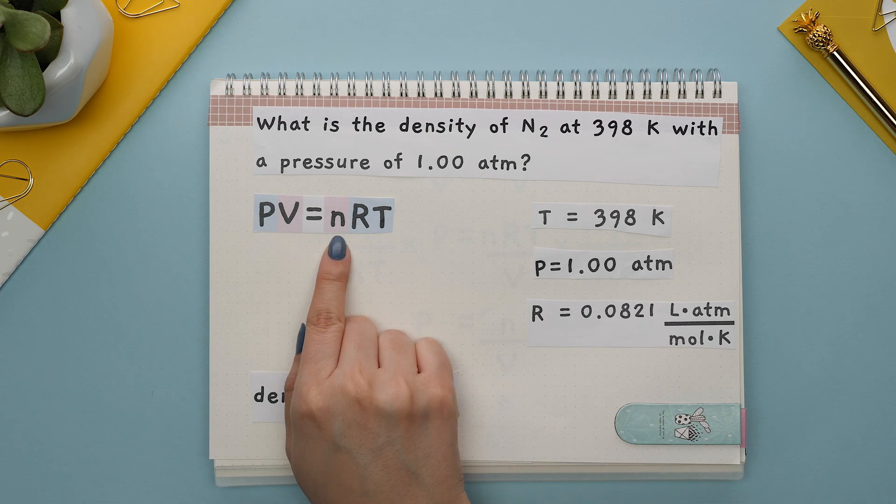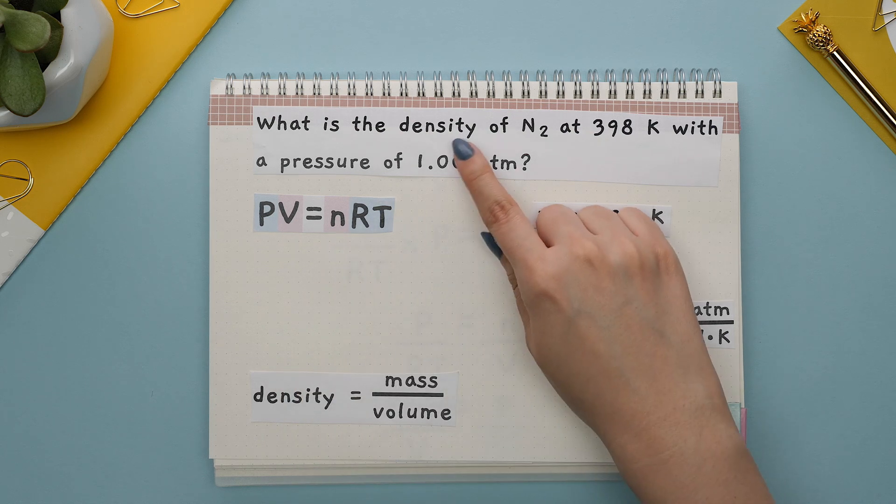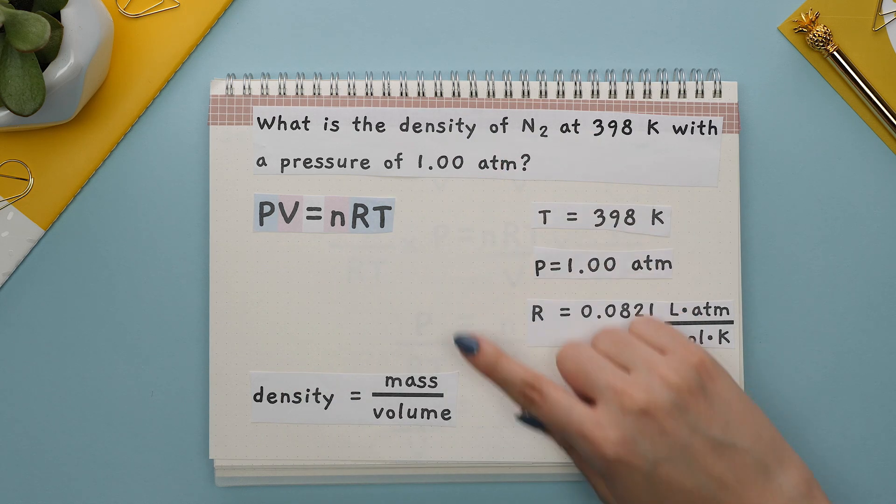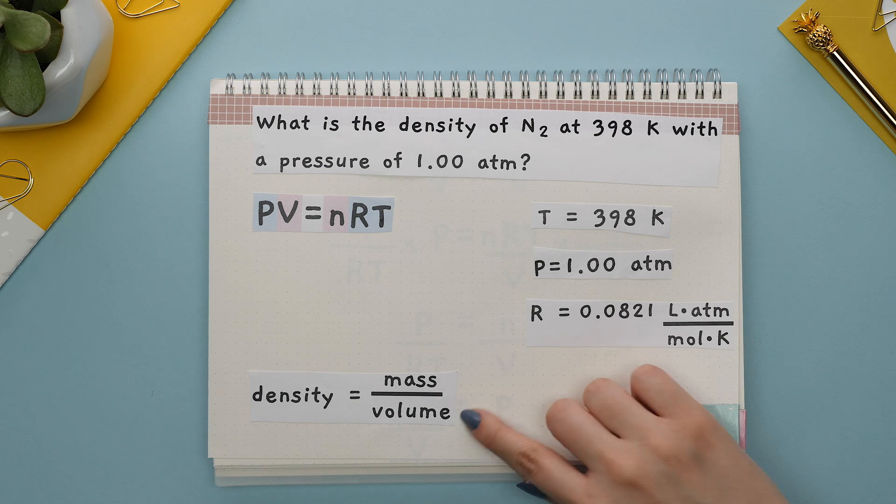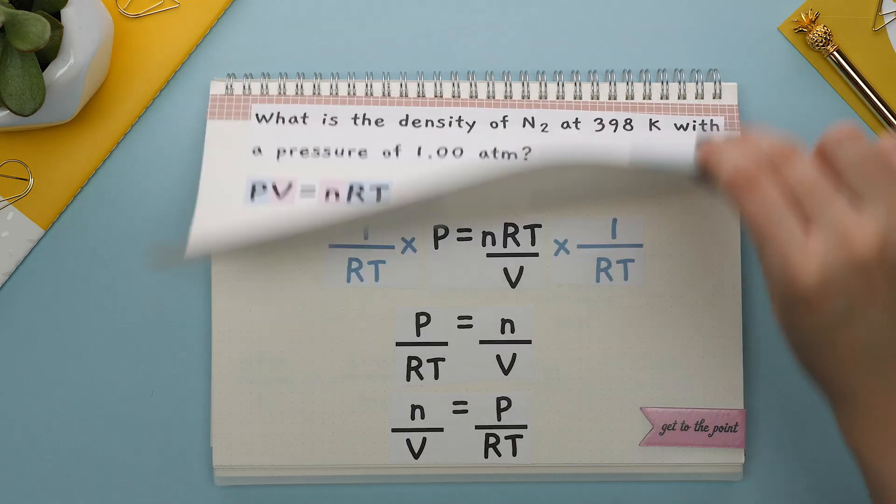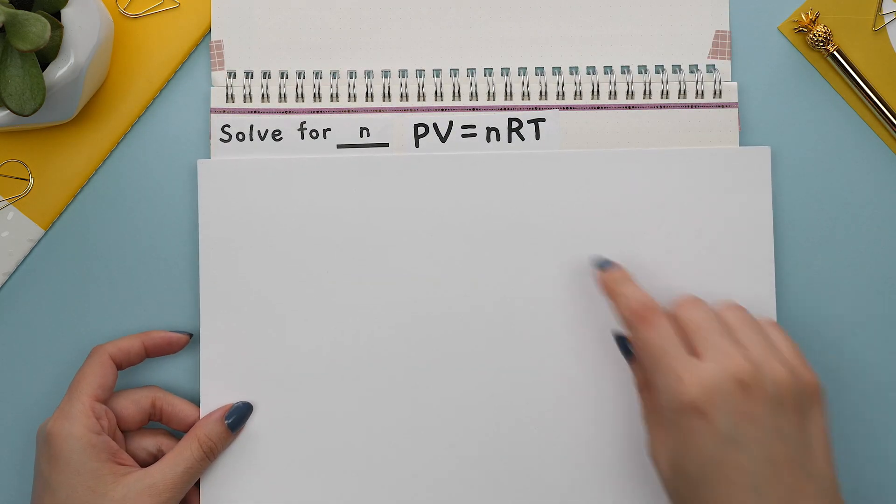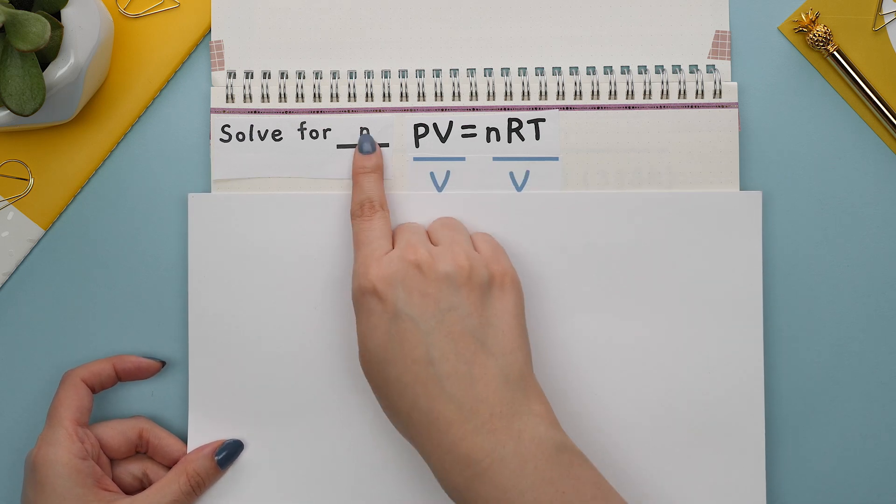We are missing two variables, the volume and the moles. Since we are asked to find the density, and density is equal to the mass divided by the volume, we can rearrange this formula and solve for the moles divided by the volume.